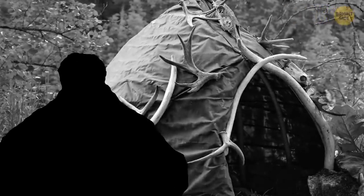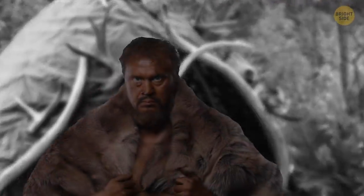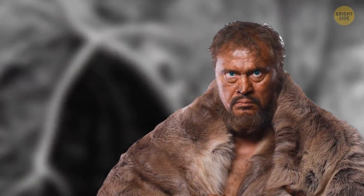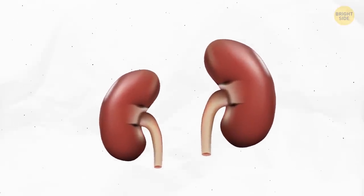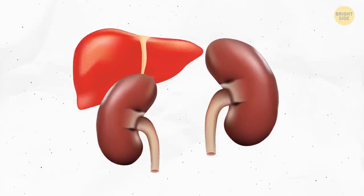The earliest known person to have had blue eyes lived in the Stone Age, 7,000 years ago. Your right kidney is probably smaller, and sits lower down than your left kidney, to make room for your liver.